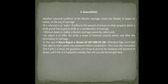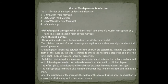There are four kinds of marriages under Muslim law: valid marriage, void marriage, irregular marriage, and Muta marriage. We will now understand each one and its legal effects.